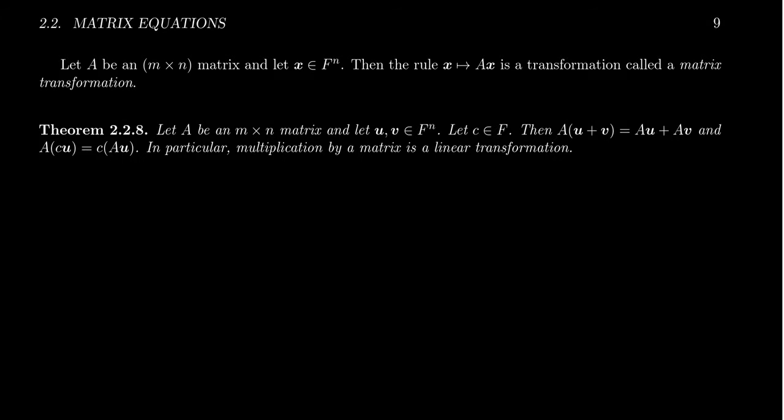We've learned that we can use matrices to encode a system of linear equations, and then by row reducing that matrix we can learn about the solution set, consistency, where the pivots are, and things like that. We've also introduced the fact that we can define matrix multiplication between a matrix and a vector, and this matrix multiplication encodes linear combinations, which are equivalent to the linear systems we saw before.